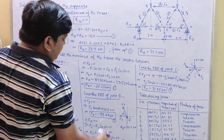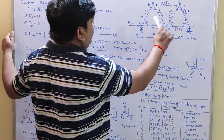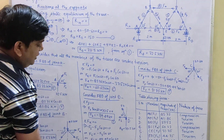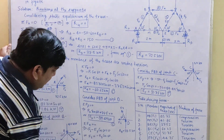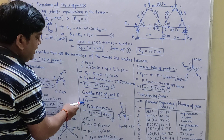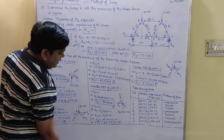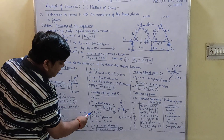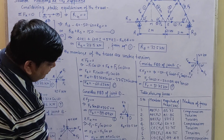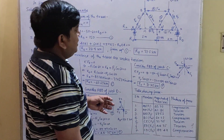We are not taking joint E or C first due to complexity; instead we solve joint D (beam joint) next as it is easier. Consider the free body diagram of joint D. Balancing forces in the vertical direction gives F7 = −89.49 kN (compressive). Using ΣFx = 0 and writing the equation in the horizontal direction, we find F6 = 44.75 kN (tensile).